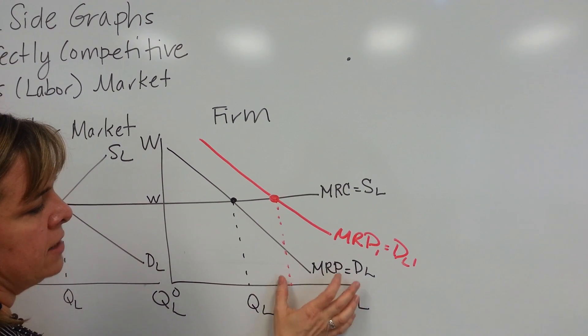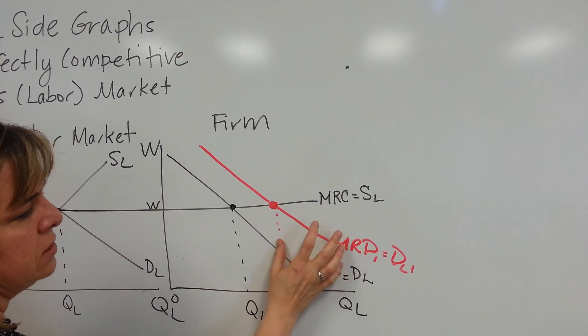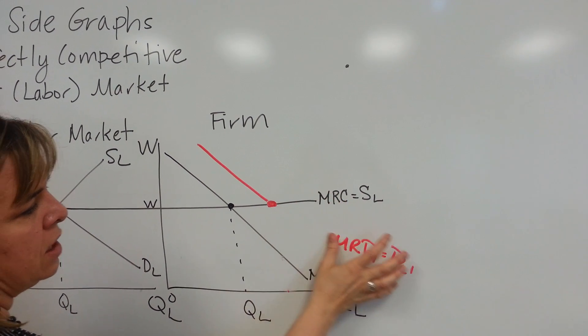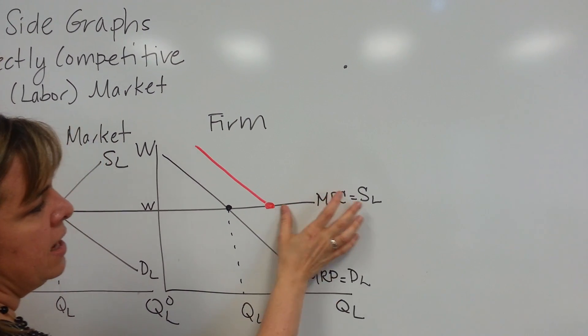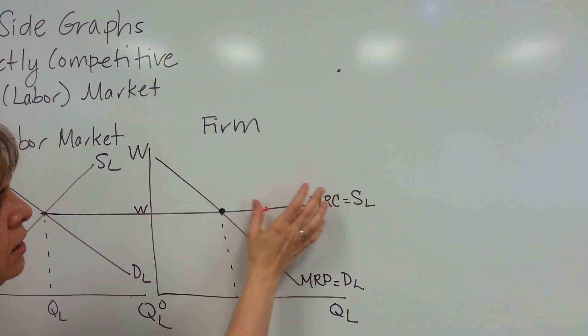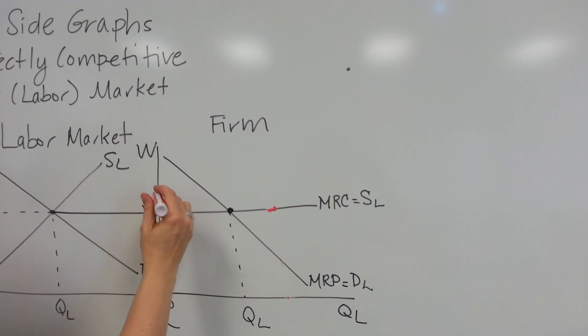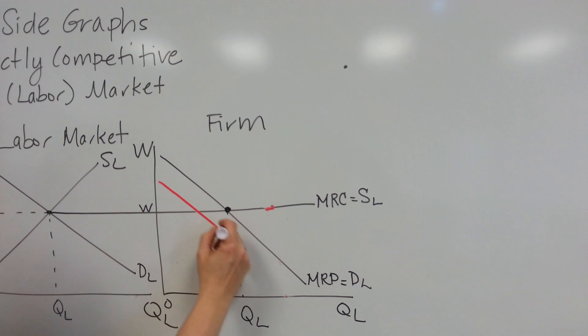Now, on the other hand, if something causes either the price of the good to decrease or my workers to become less productive, then I would have to show it on my graph a different way. A decrease in MRP will move my graph this way.